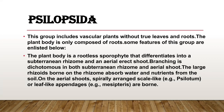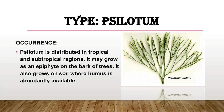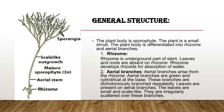On the aerial shoots, spirally arranged scale-like leaves and leaf-like appendages are present, for example in Psilotum. Psilotum is distributed in tropical and subtropical regions. It may grow as an epiphyte on the bark of trees, and also grows on soil where humus is abundantly available. Taxonomic position: Division Psilophyta, Class, Order, Family, Genus: Psilotum.